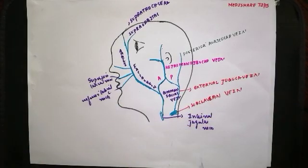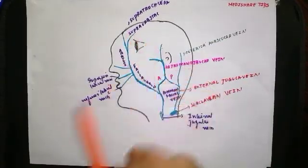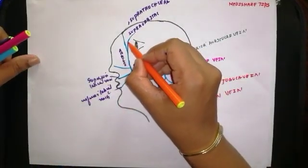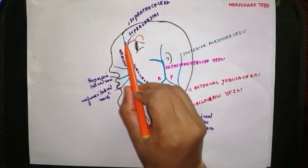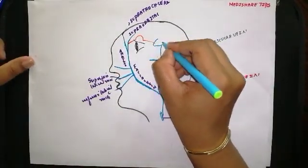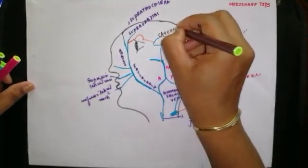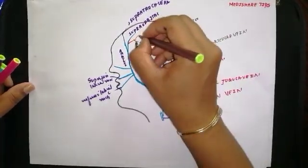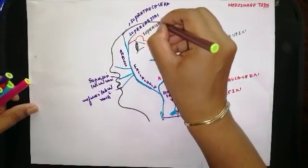These are the superficial veins. There are also some deep veins which communicate with the superficial veins. There is a superior ophthalmic vein which communicates with the supraorbital vein. The superior ophthalmic vein is a tributary of the cavernous sinus.